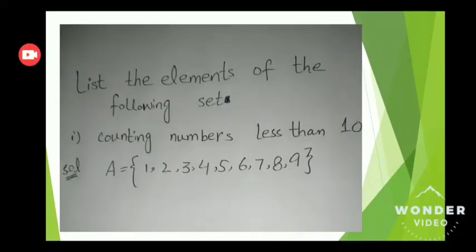Question number 3: list the elements of the following sets. Part 1 — counting numbers less than 10. Solution: A = {1, 2, 3, 4, 5, 6, 7, 8, 9}. These are 9 numbers and all 9 numbers are less than 10.